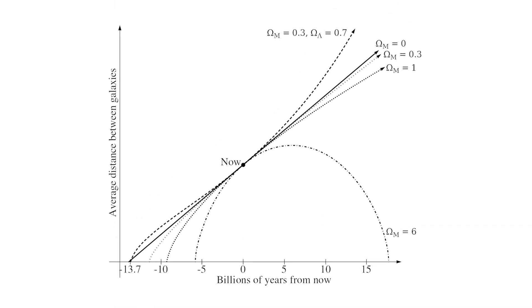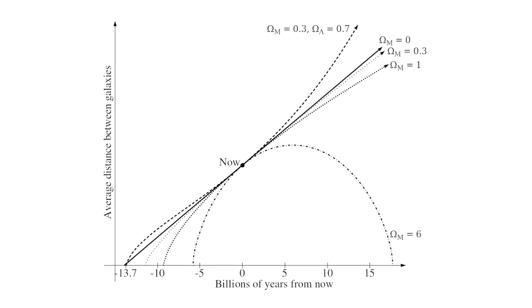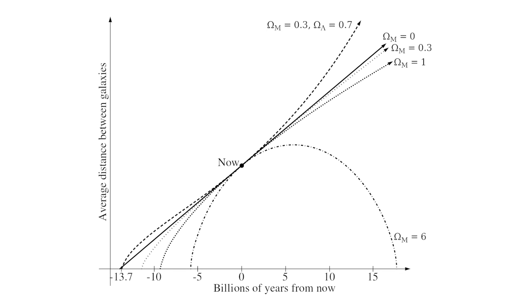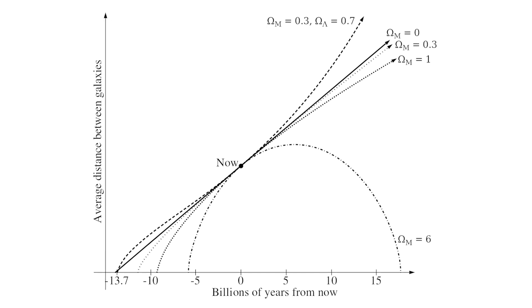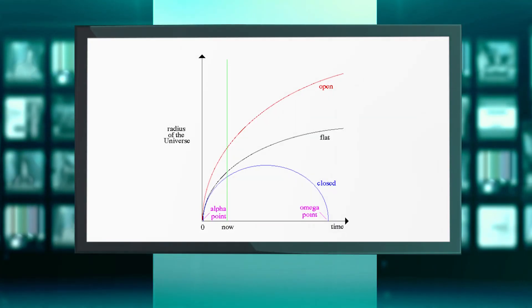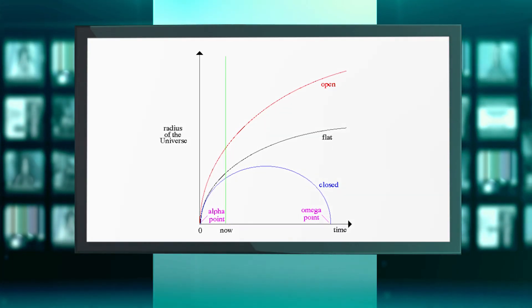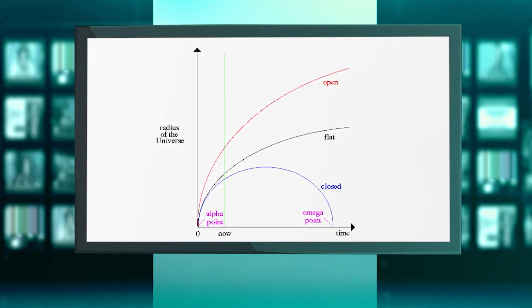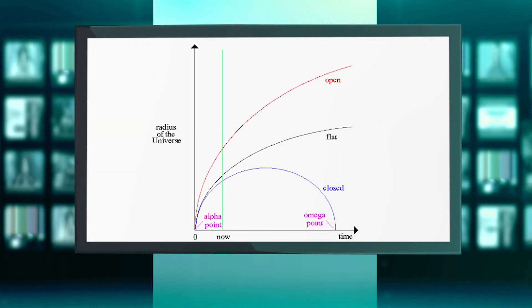Omega equals 1 is an unstable equilibrium point of cosmological evolution. So, it resembles the situation of a pencil balancing on its sharpened tip. The phrase equilibrium point implies that if Omega is ever exactly equal to 1, it will remain exactly equal to 1 forever.